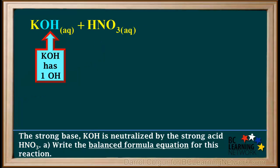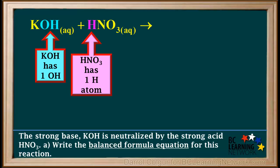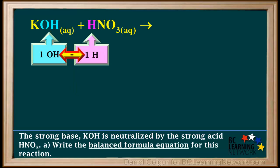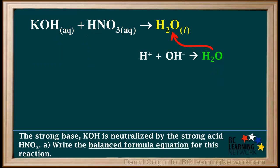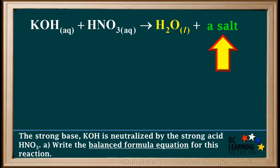The base KOH has one OH, and the acid HNO3 has one H atom. So the number of Hs in the acid is equal to the number of OHs in the base — they are both one, so we don't need to add any coefficients to these two reactants. We know that one H+ and one OH− react to produce one molecule of water, so we'll add one H2O to the product side. Remember that H2O is a molecular liquid at room temperature, so we use the subscript L for it. The product of most neutralization reactions is water and a salt.